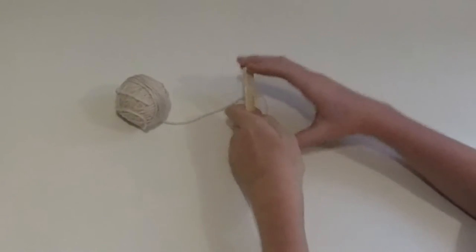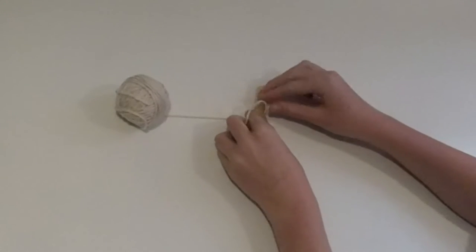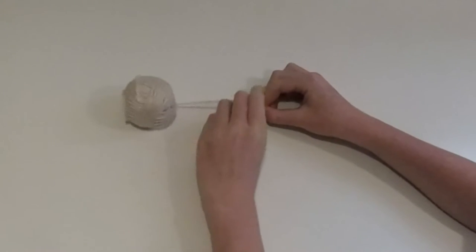First, tie the popsicle sticks together, spread them apart, wrap the yarn around each opening three times and make a loop to secure it.